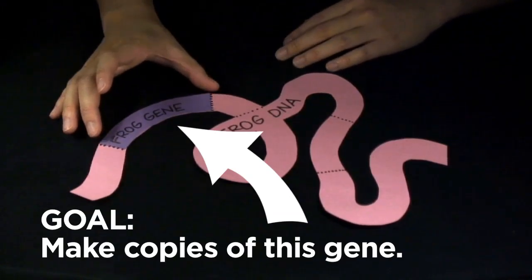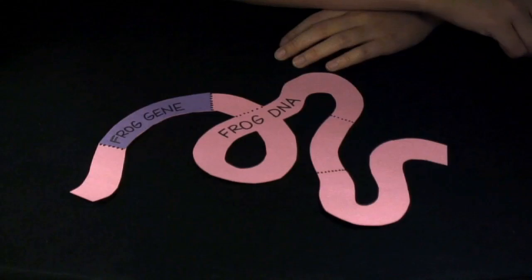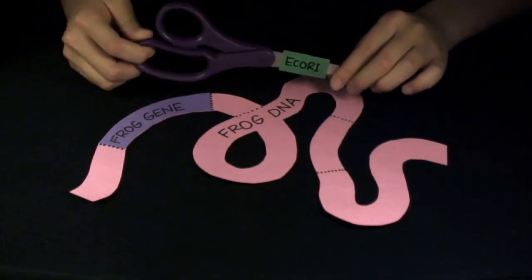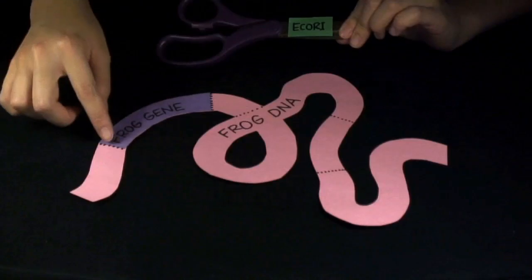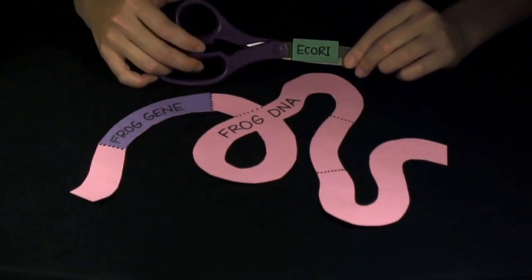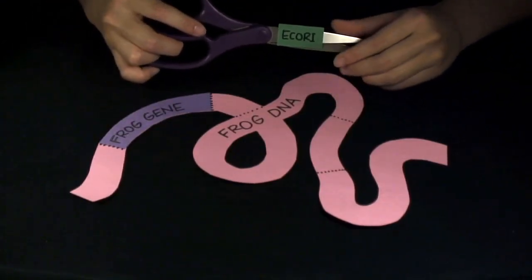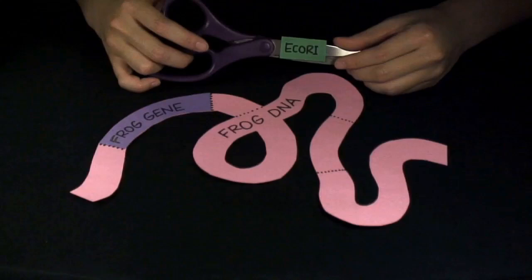We're going to cut this piece out using a restriction enzyme. This is the thing that Boyer discovered. It's kind of like a pair of scissors. By cutting the DNA at specific points, we can get different pieces.